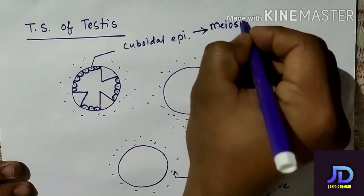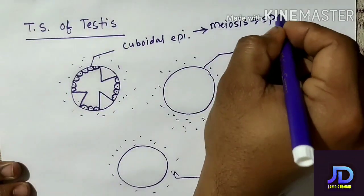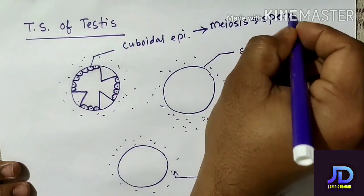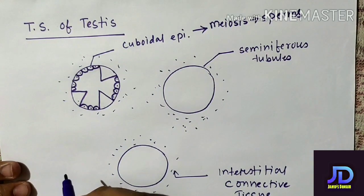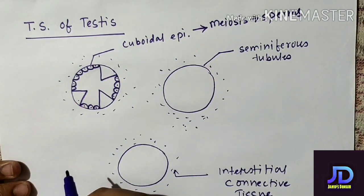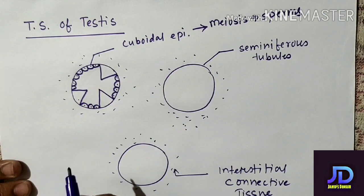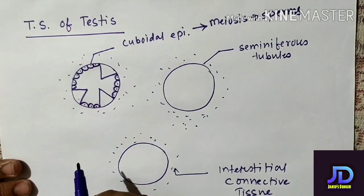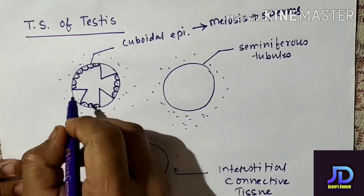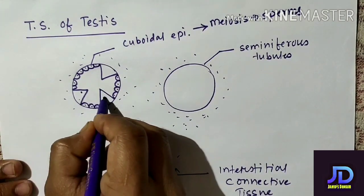This cuboidal epithelium undergoes meiosis cell division, and it will result in the formation of sperms. So sperms are formed from the germinal epithelial layer — specifically from the cuboidal epithelial cells.